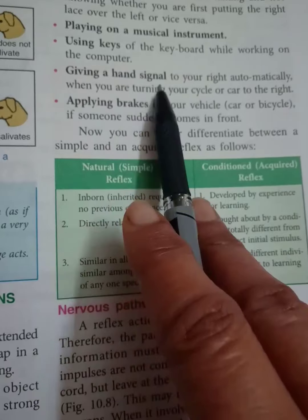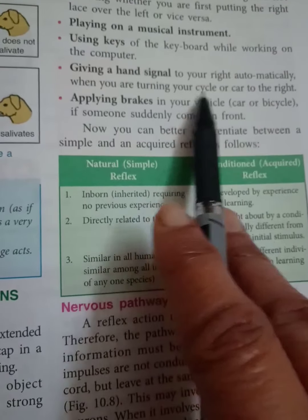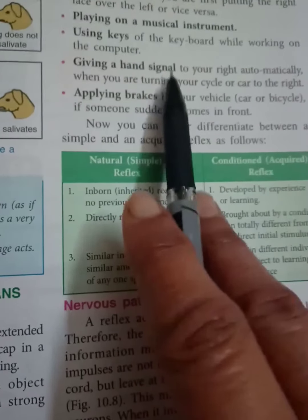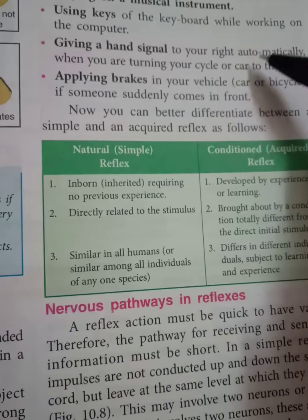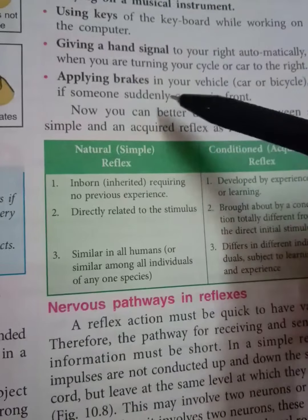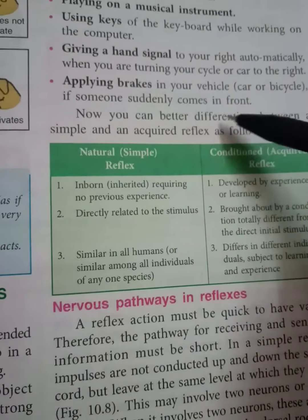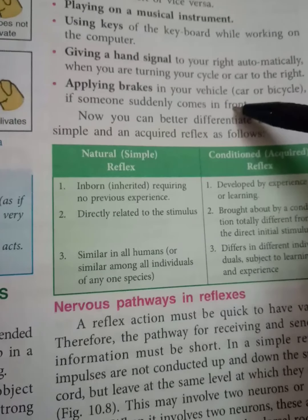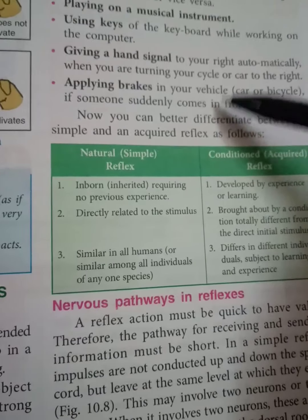Then giving a hand signal to the right automatically while turning your cycle or car to the right — or nowadays, pressing the electric indicator. And applying brakes in your vehicle, whether car or bicycle, if someone suddenly comes in front. All these acts we learn and they become conditioned reflexes.